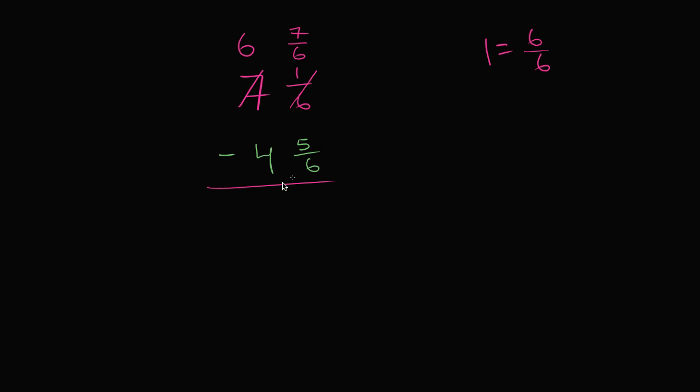So 7 sixths minus 5 sixths is 2 sixths. And 6 minus 4 is 2. So it's 2 and 2 sixths. Or if we wanted to rewrite 2 sixths, they're both divisible by 2. This is the same thing as 2 and 1 third. So you could also write it like that.